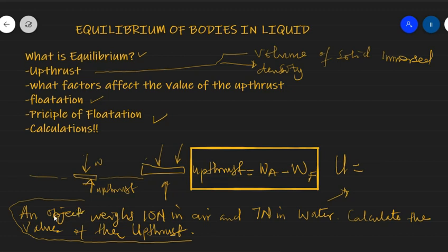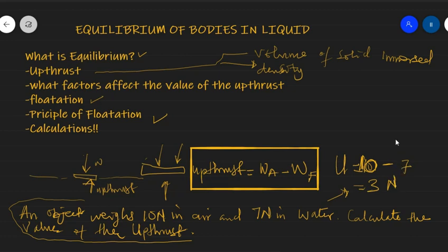It says: an object weighs 10 newtons in air and 7 newtons in water. Calculate the value of the uptrust. The difference in weight in air and weight in water determines the uptrust. So uptrust equals weight in air minus weight in fluid — that's 10 minus 7, which equals 3 newtons. Pretty straightforward.